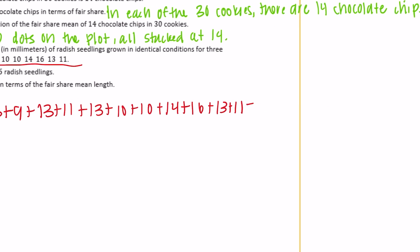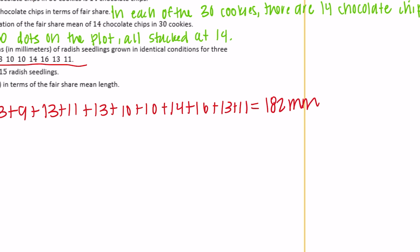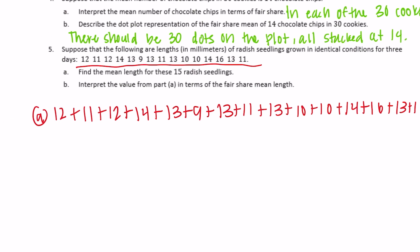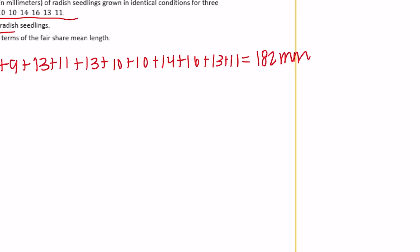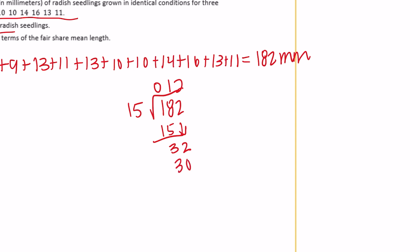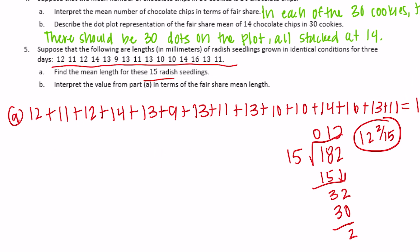When you add them all together — you can add them yourself or use a calculator — you get 182 millimeters. Then we count how many there are: 15 radish seedlings. So we divide 182 by 15. 15 goes into 18 once, bring down the 2, 15 goes into 32 twice, with 2 left over. So the mean is 12 and 2/15 millimeters.